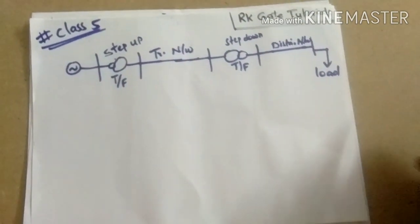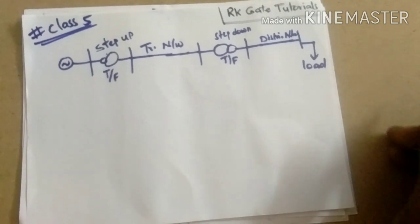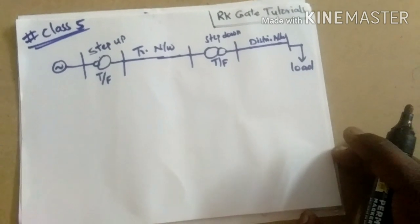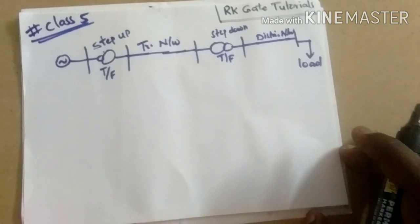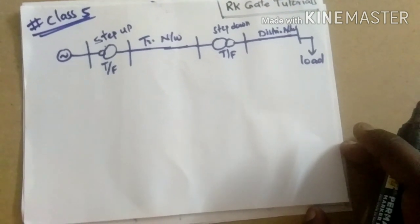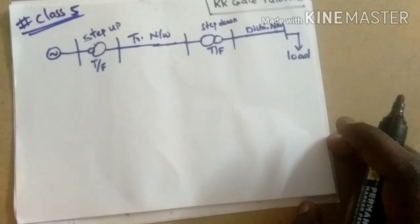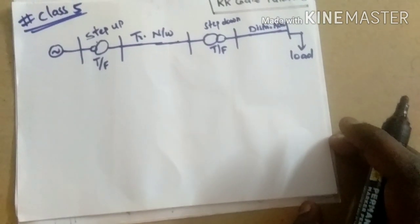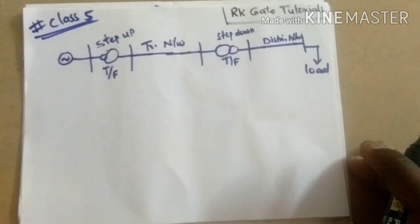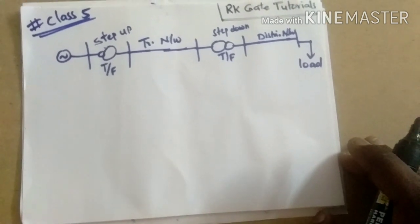Hello guys, welcome to my channel RK Gate Tutorials, and to class five. In the previous class we started the consequences and the analysis of the short circuit faults in the transmission line. In this class five we will discuss a most important topic: the configuration of relay and circuit breaker, or the relay-circuit breaker configuration.